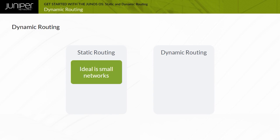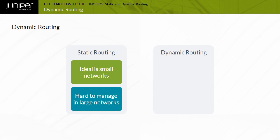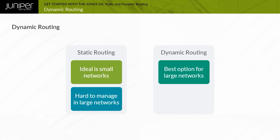Static routing is ideal in small networks where only a few routes exist or where absolute control of routing is necessary. However, static routing has drawbacks that make it cumbersome in large environments where growth and change are constant. For large networks or networks that change regularly, dynamic routing might be the best option.